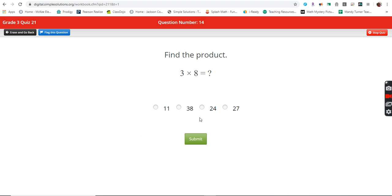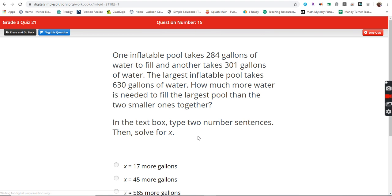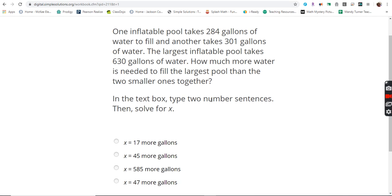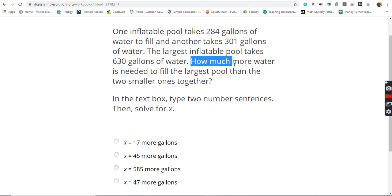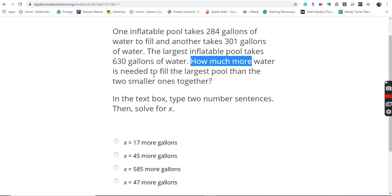Find the product three times eight. Eight, 16, 24. One inflatable pool takes 284 gallons of water to fill and another takes 301 gallons of water. The largest inflatable pool takes 630 gallons of water. How much more? That is our subtraction. That is our subtraction word problem.